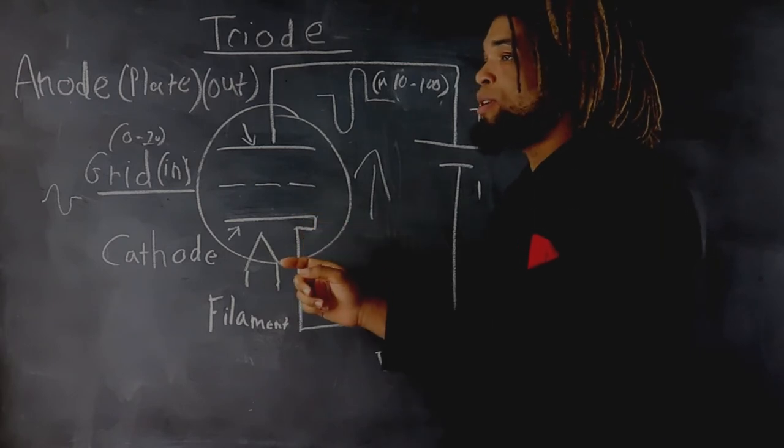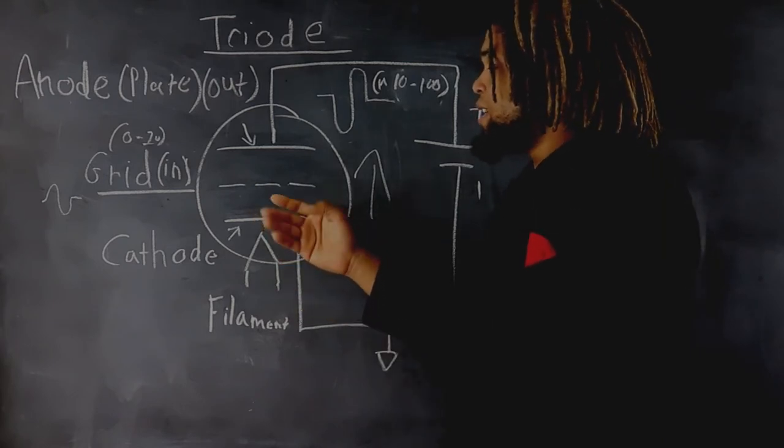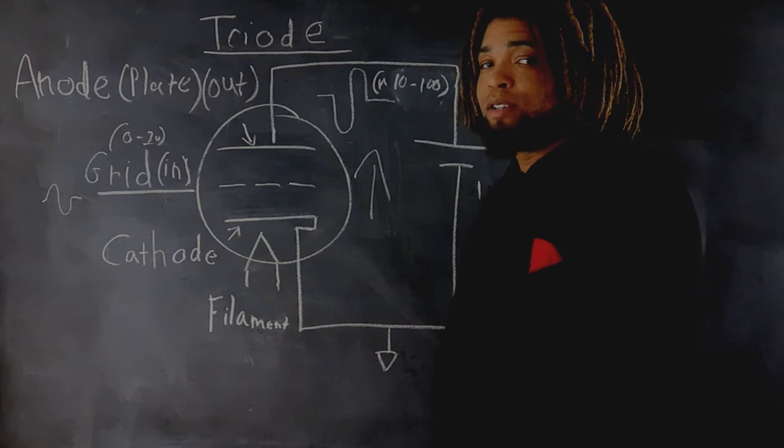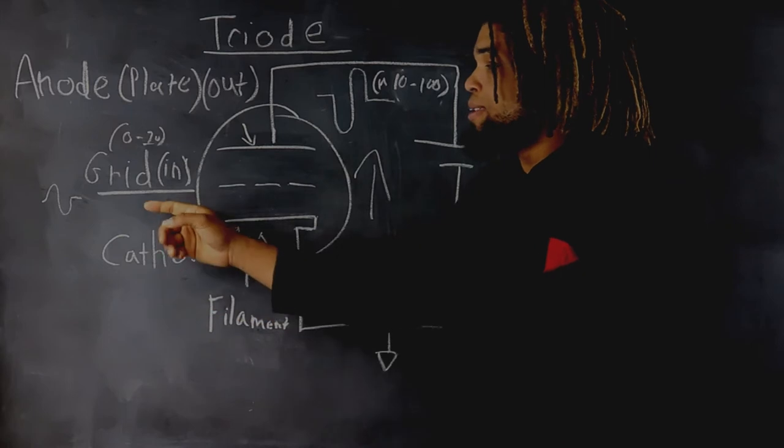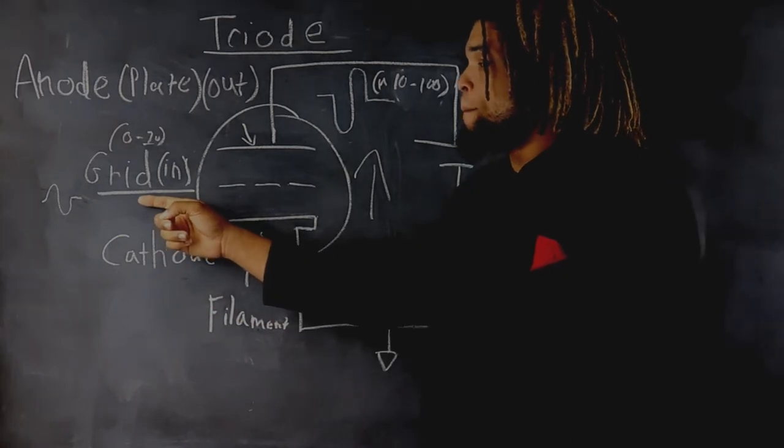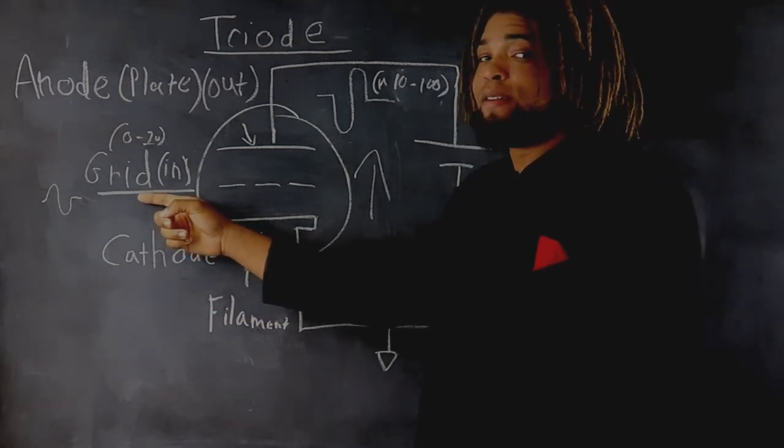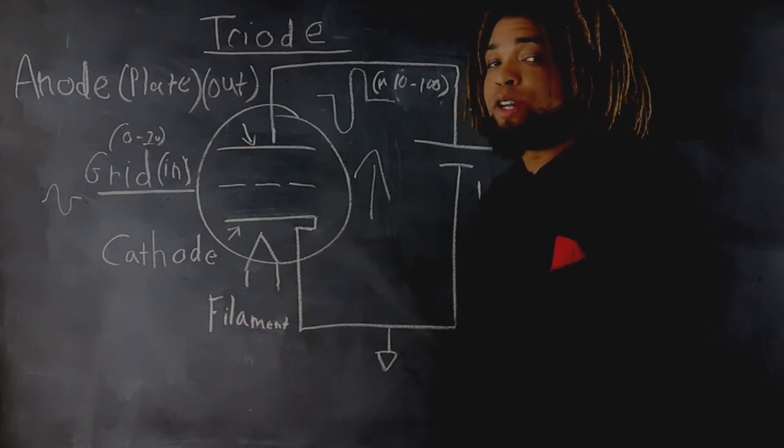The amount of negatively charged electrons that naturally want to flow to the positively charged plate is dictated by the voltage imposed at the grid, or what is sometimes called the control grid.